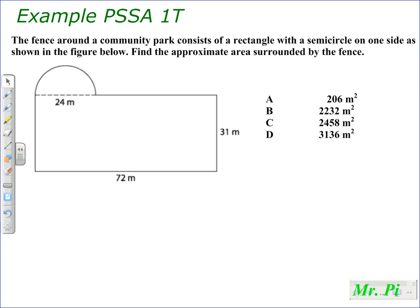This is Mr. Pi and here we are with another problem. This is a geometry lesson involving the area of an irregular shaped figure. The fence around a community park consists of a rectangle with a semicircle on one side as shown in the figure below. Find the approximate area surrounded by the fence.